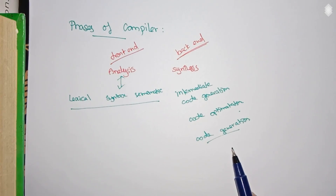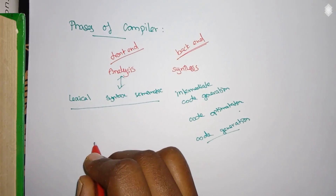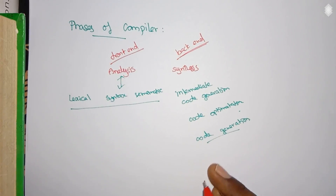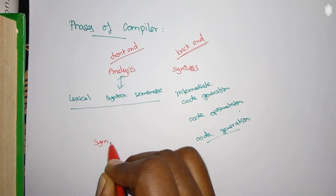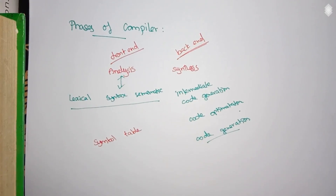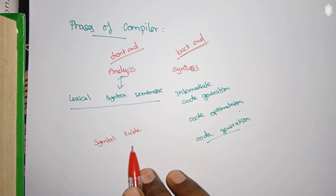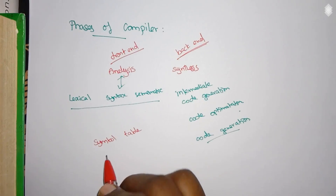Along with all these phases, we have two data structures that accompany the compilation process. The first is the symbol table — a data structure that stores information about the source program, including all variables, identifiers, and so on.